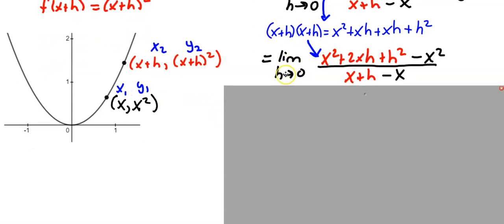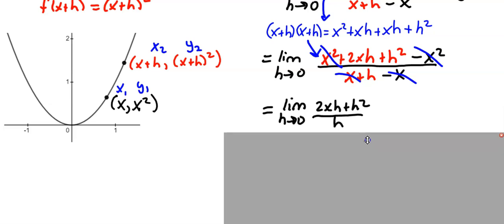The discontinuity is h. So let's simplify what we have in the numerator, and what you'll notice in the numerator is anything that does not have an h in it subtracts out. I have an x squared minus an x squared in the numerator, and I have an x minus an x in the denominator. So I'm left with 2xh plus h squared all over h.